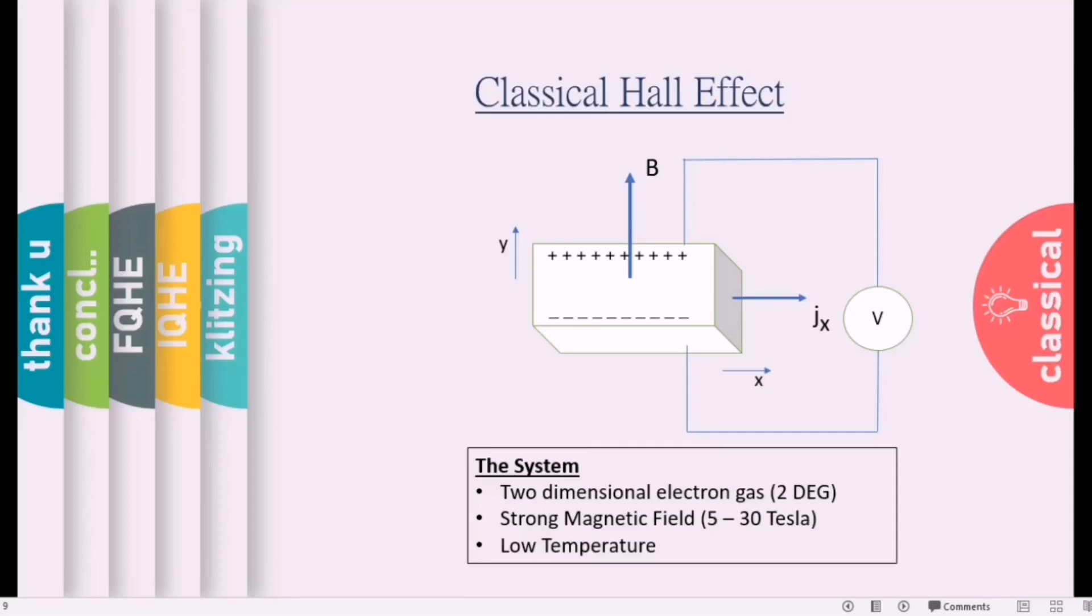The current is flowing in this direction, that is in the X axis, and call it as Jx. And there is voltage developed here in the transverse direction because of the segregation of charges. This voltage is called Hall voltage. There is also resistivity in the direction of flowing current which is given as ρxx, generally called as longitudinal resistivity or also known as magnetoresistance.